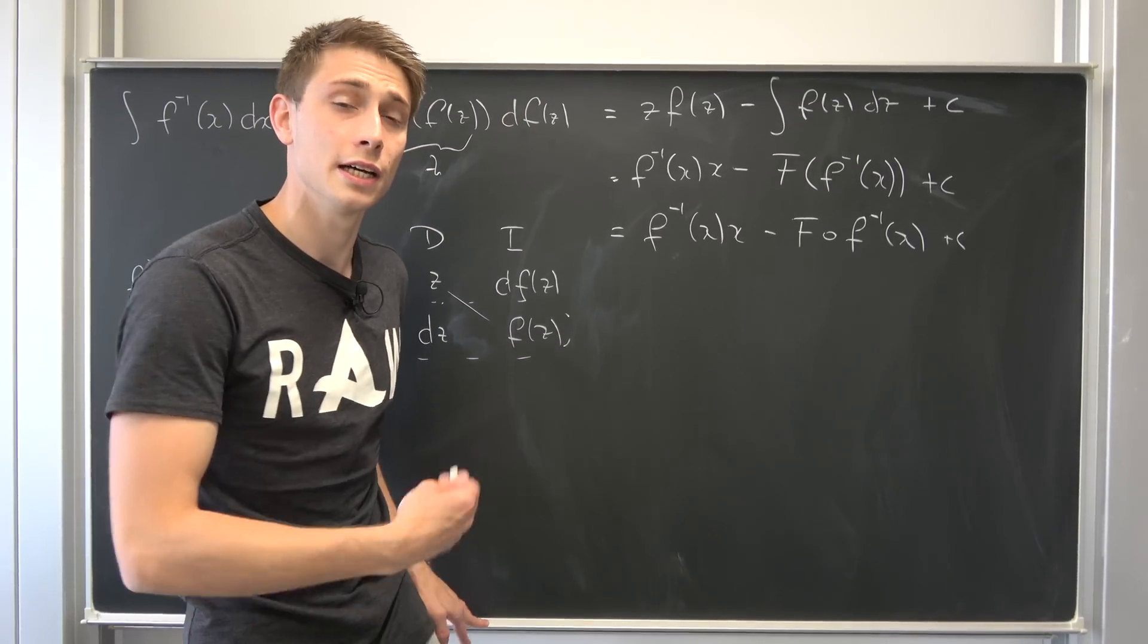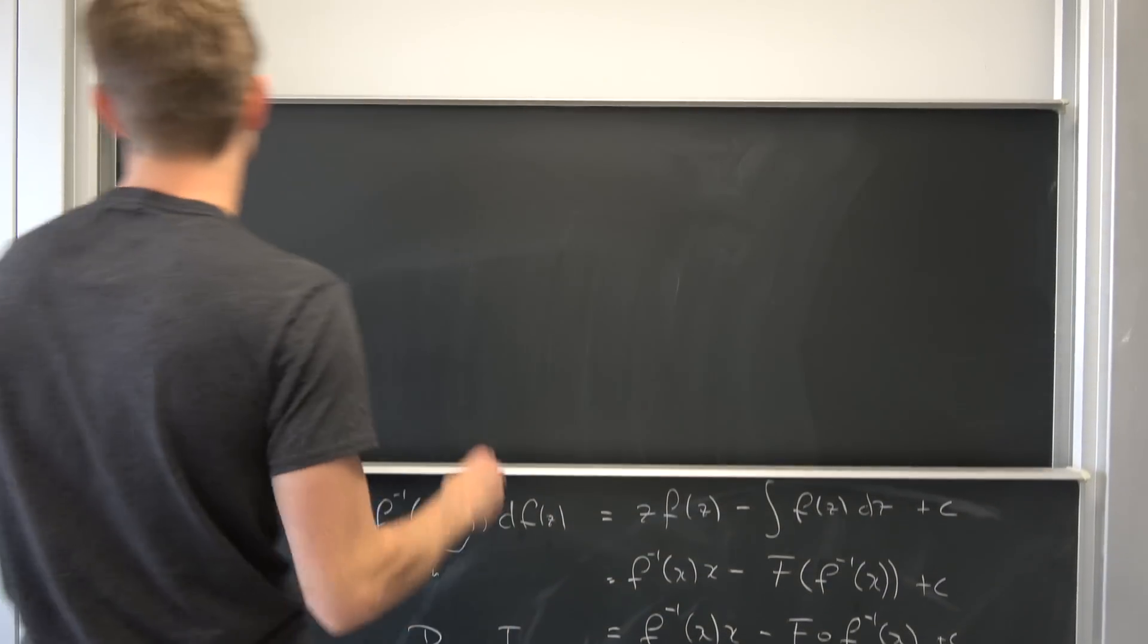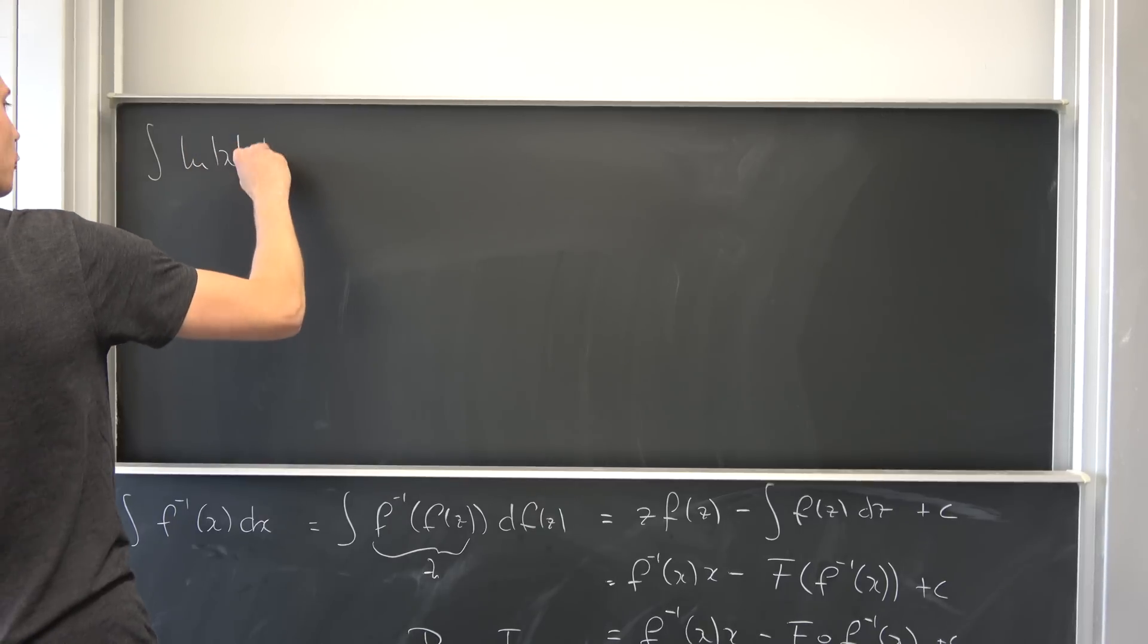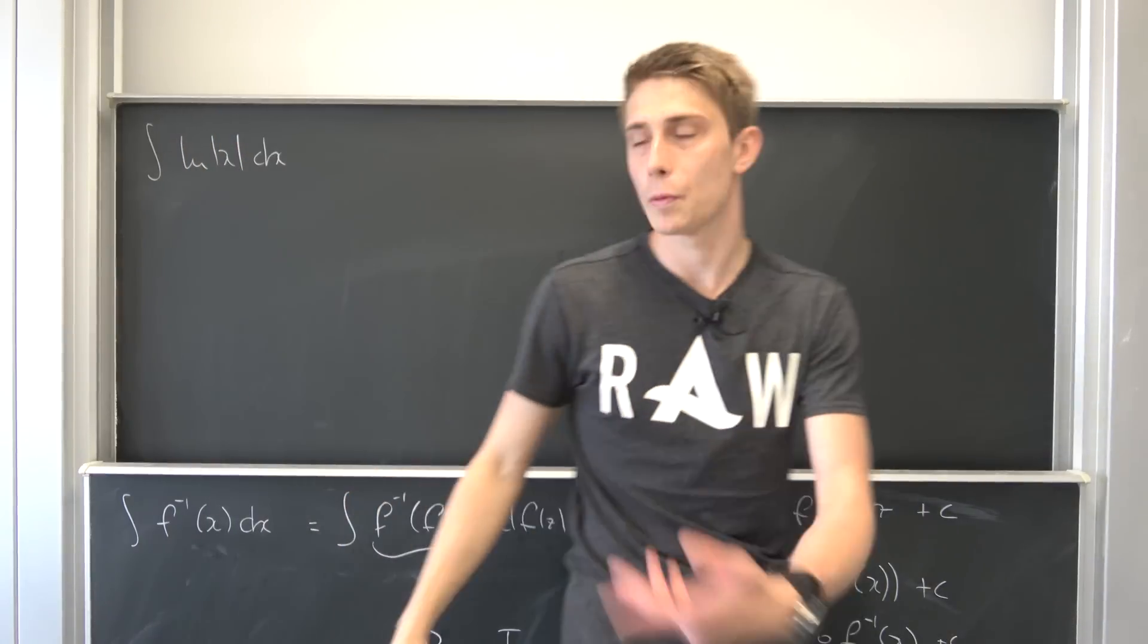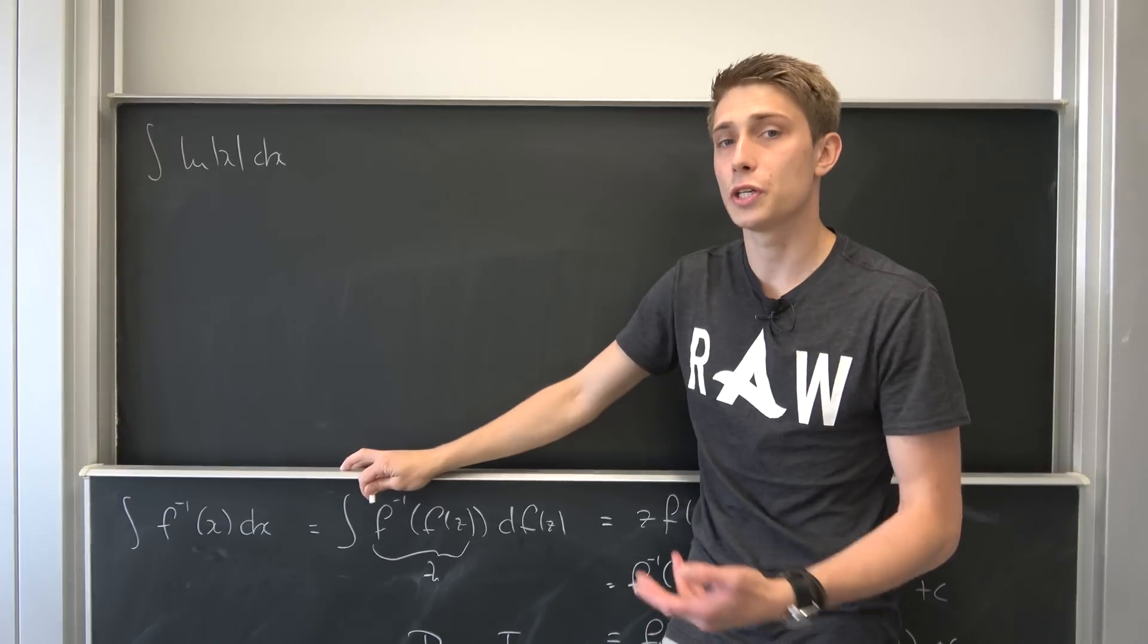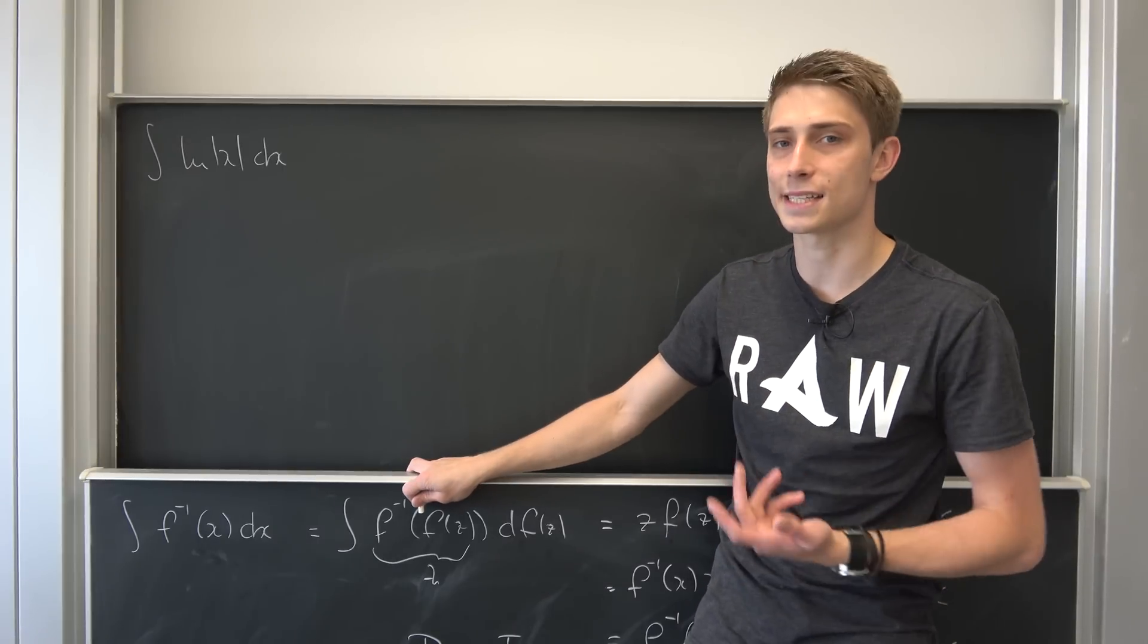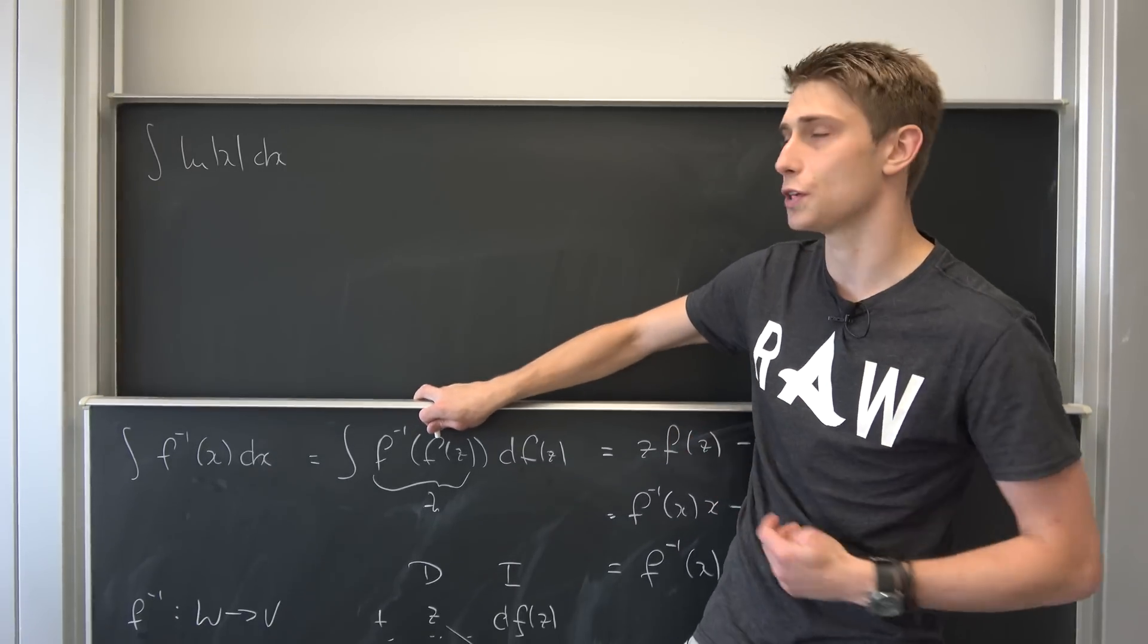For example, to integrate the natural log of x quite easily. So the natural log of the absolute value of x dx. We would like to integrate this right here. You can do it using integration by parts. It's basically the same idea as down here. But we are going to just use this theorem here.